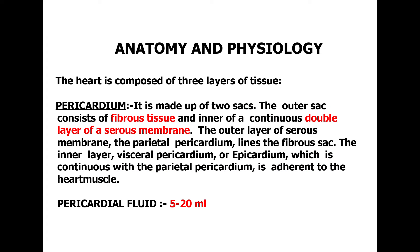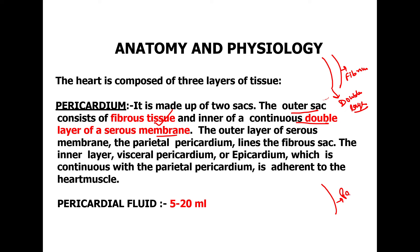We will discuss the outermost layer, which is termed the pericardium. The pericardium has two parts: the outer sac is made up of fibrous tissue, and the second is an inner continuous double layer of serous membrane. The outer portion of the double layer is the parietal pericardium, and the inner portion is called the visceral pericardium.